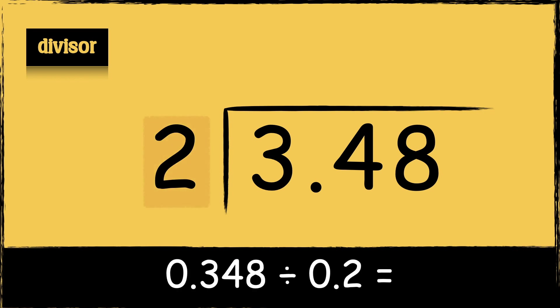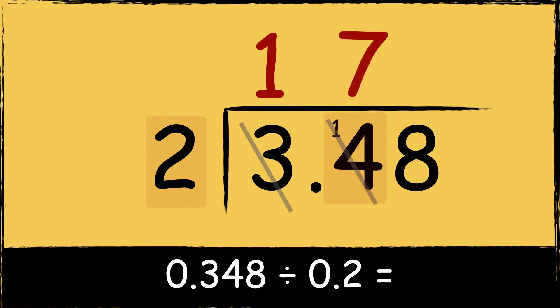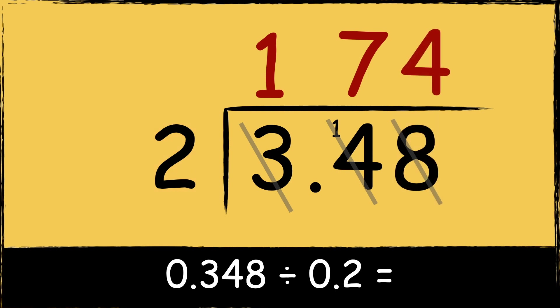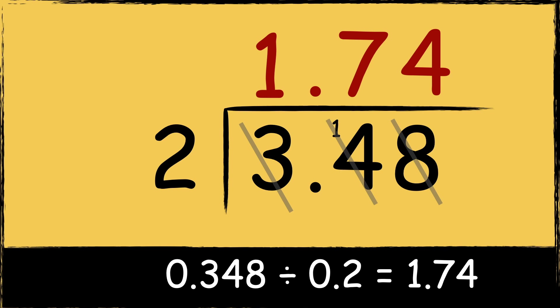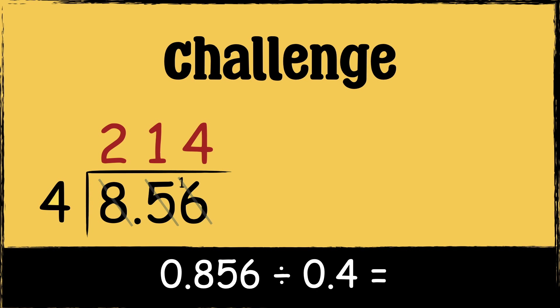Now we can find out how many times the divisor fits into these numbers. Two goes into three once with one left over. Two goes into 14 seven times. Two goes into eight four times. The dividend has two digits after the decimal point, so we need to make sure that the answer also has two digits after the decimal point. So the answer is 1.74.